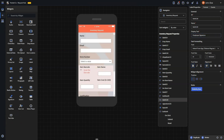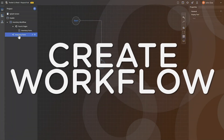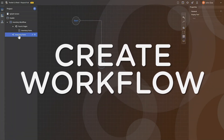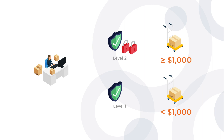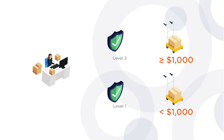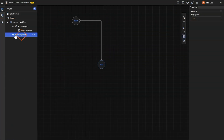Once you're done with the front end of the form, save the app. Here is where the magic of the workflow comes in. Let's say your supply chain department has two levels of approval: for items under $1,000, level one approval is enough, and for items over $1,000, it should be set to level two approval.